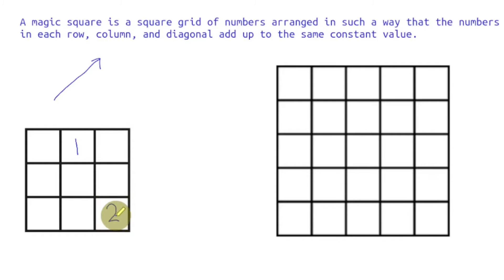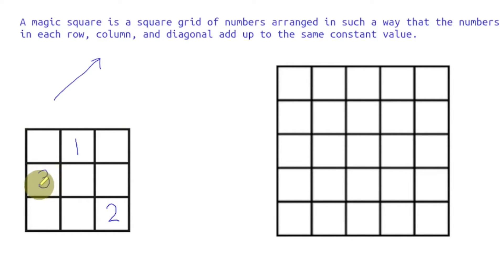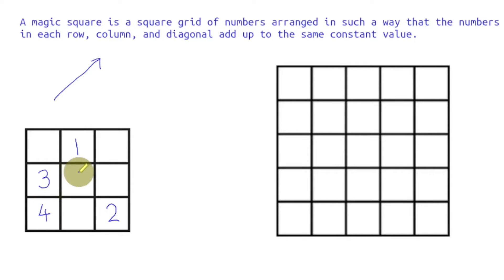Again we try to move up and right, and again we are out of the square, so we wrap around on the other side and 3 comes there. Now when we try to move up and right, this cell is already filled, so we go one square down and 4 comes there. Then we move up and right: 5. Up and right: 6.